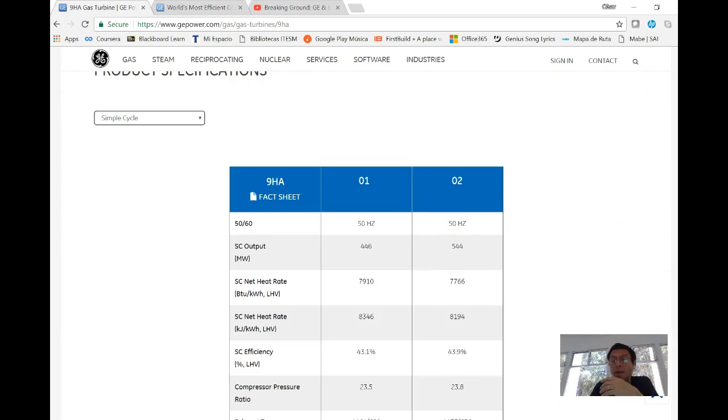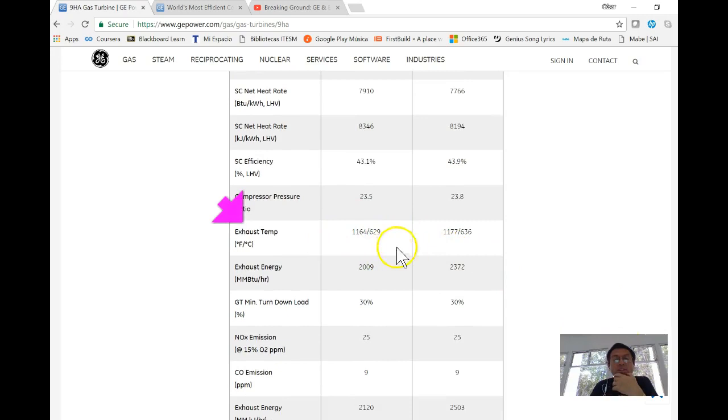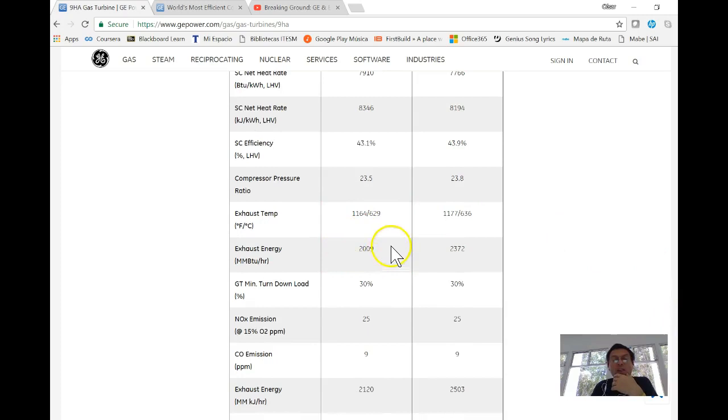I can keep scrolling and I can see that the exhaust temperature of the gases is 629°C - a lot of energy, millions of BTUs per hour. Remember the BTU is a British thermal unit. That means that I can use it.